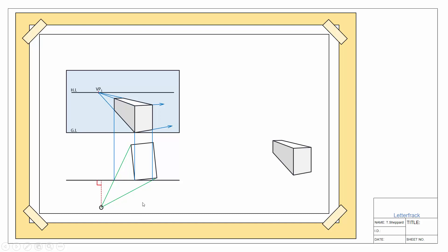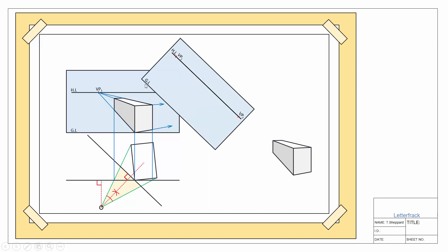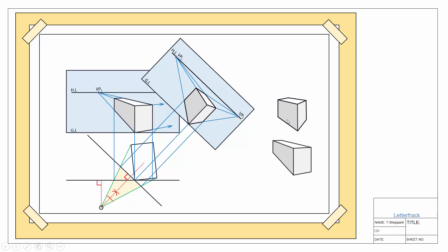We divide this angle in half using our division of angle method: swing an arc from our spectator's point, then two further arcs — one from each extremity — to give us the bisector. This line of vision looks at the center of our object and gives us the clearest view. Our new picture plane is then at 90 degrees to that line of vision. You can see our object is now contained within the cone of vision. Projecting parallel to the new picture plane for our ground line and horizon line and finding our vanishing points in the usual manner, we get a perspective image that is much more proportional — the two sides are more like their real-life dimensions, as opposed to the stretched, distorted view before.